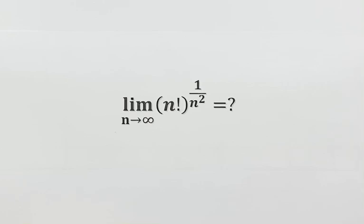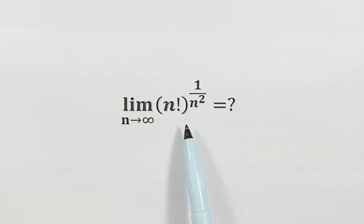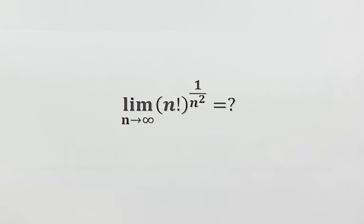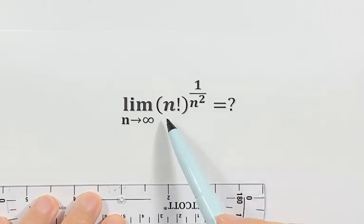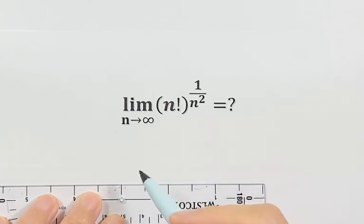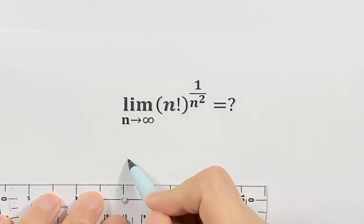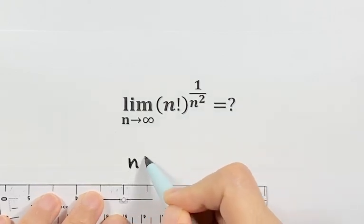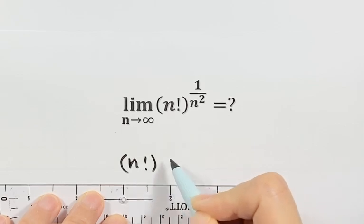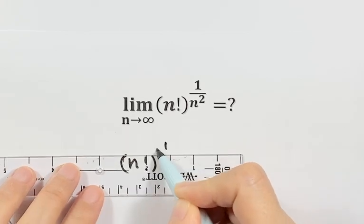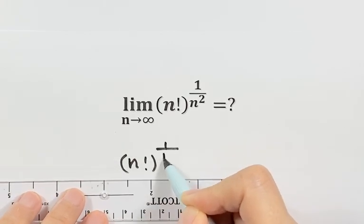Hello everyone. In this video we can find the limit of n factorial to the power of 1 over n squared. So we can use the sandwich theorem to find the limit. First let's write down the expression: n factorial to the power of 1 over n squared.